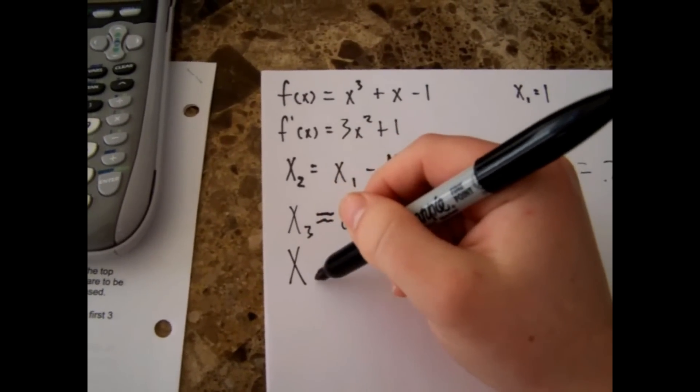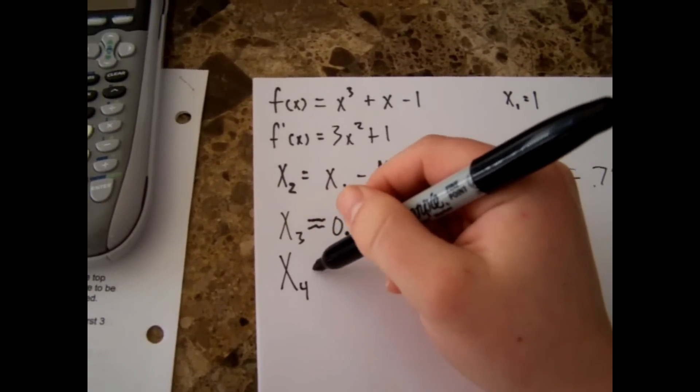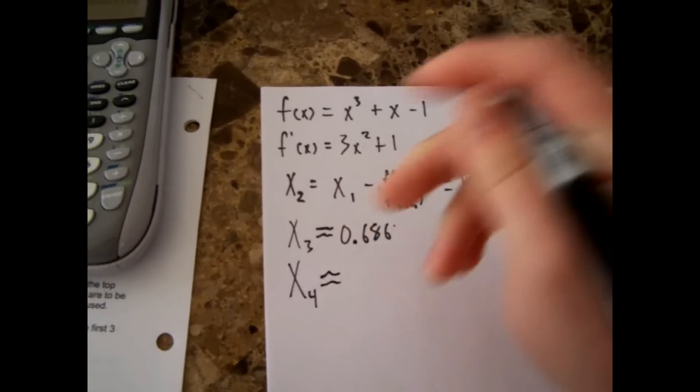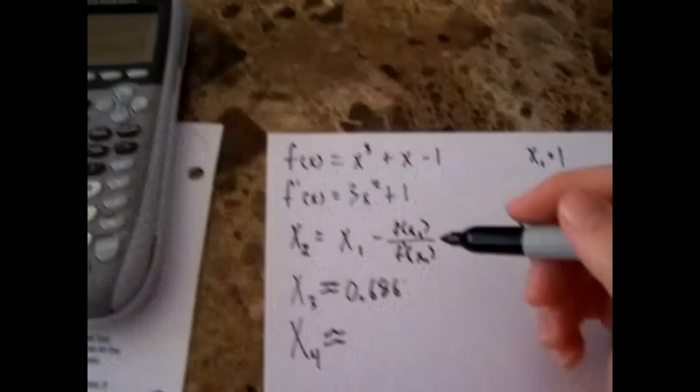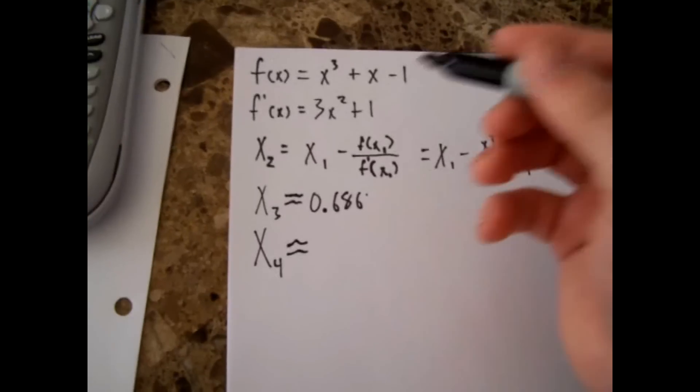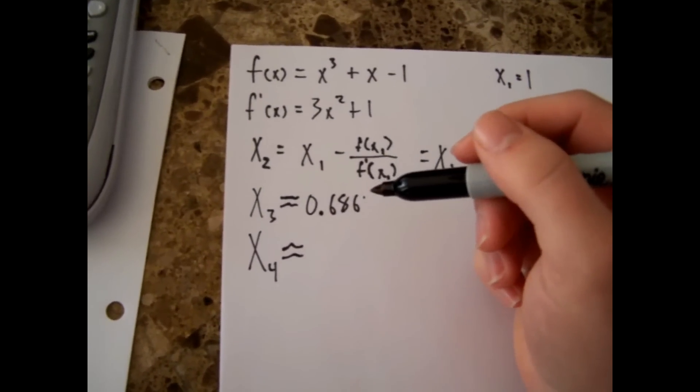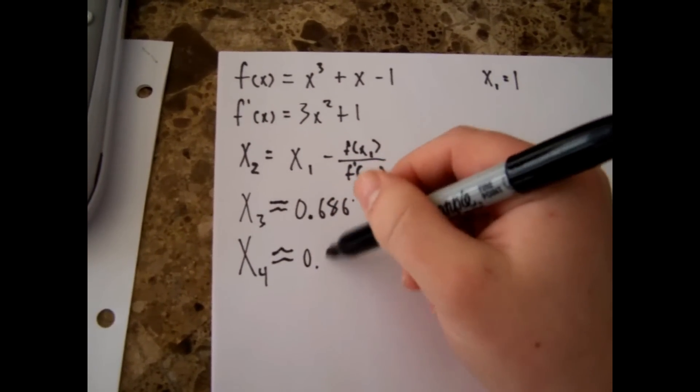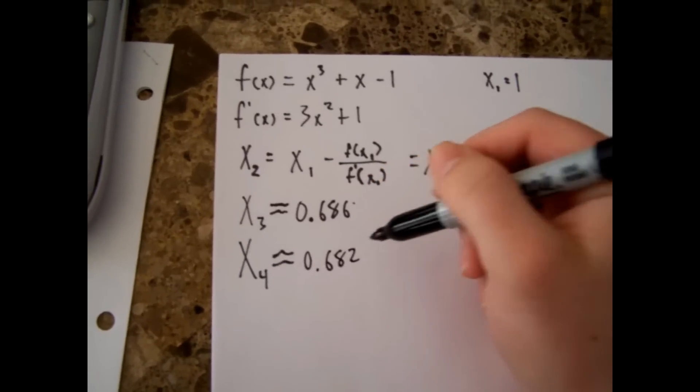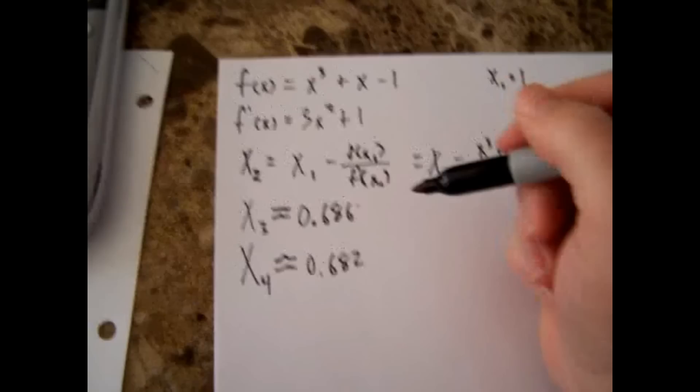And then to get your third iteration you get your x₄, which will be approximate. Just hit enter again on your calculator. And for that you get 0.68233, so you round down so it's 0.682. And that should be your answer.